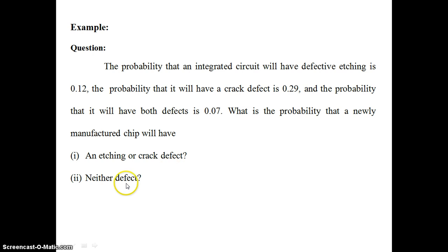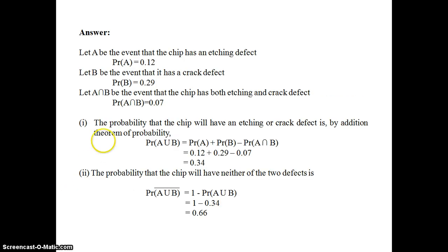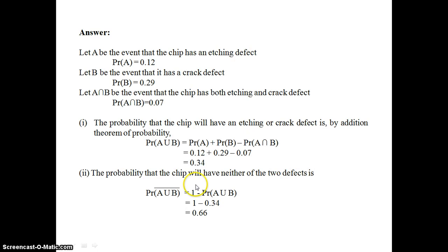Now for the next question: neither defect — the chip should have neither an etching defect nor a crack defect. The probability that the chip will have neither of the two defects is the probability of the complement of A union B, which equals 1 minus probability of A union B. Using the result from the first question, that is 1 minus 0.34, which equals 0.66. So 0.66 is the probability that the chip will have neither of the two defects.